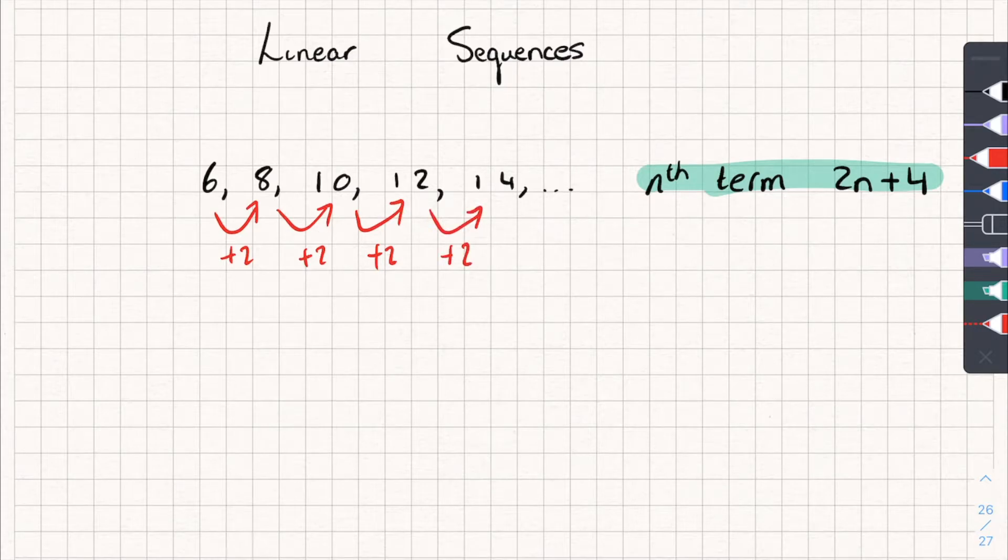So what I do is I take this common difference, and I put it in front of an n, I make it the coefficient of n, so you can see 2n. I'm now going to work out some values when n is equal to 1, 2, and 3. Because bear in mind, when n equals 1, I want it to give me the first term, which is 6. So let's see where we're at.